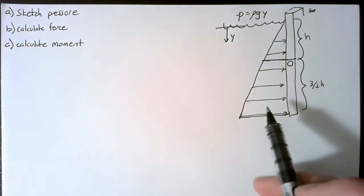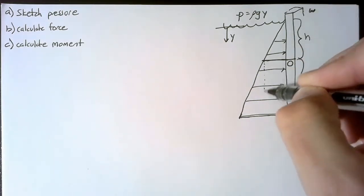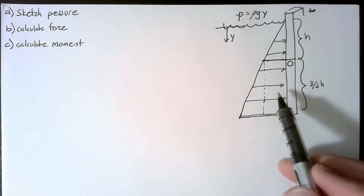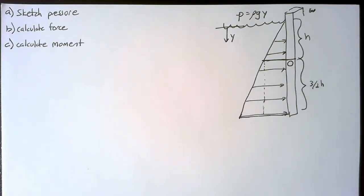We care specifically about the portion of the water that's pressing against our gate. Now the easy way to do this is to split this into two separate pieces. So we have a rectangular distributed load and a triangular distributed load.